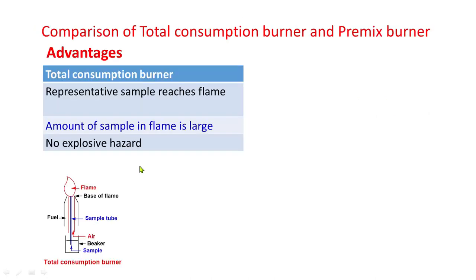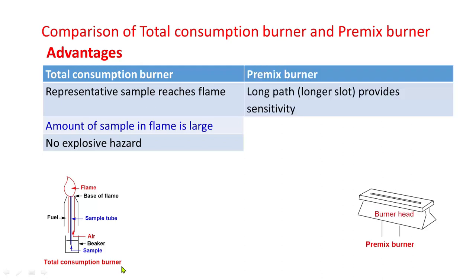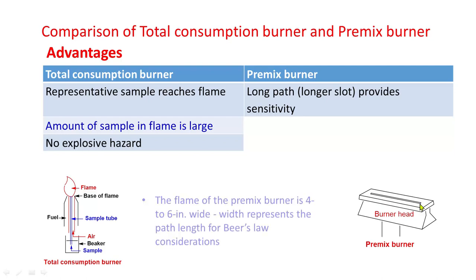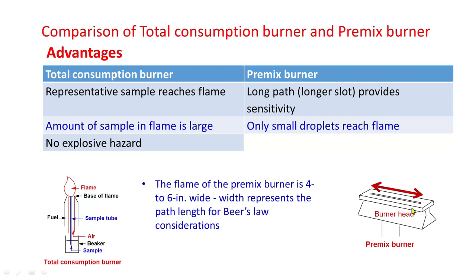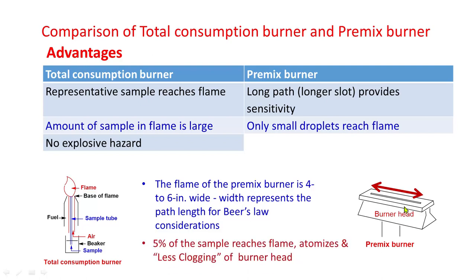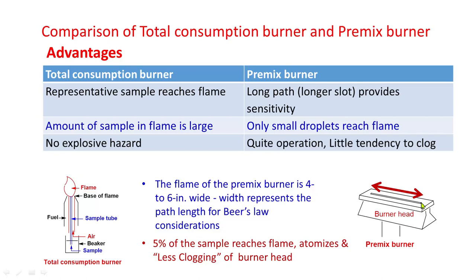Comparing the advantages of the two burners: for the total consumption burner, a representative sample reaches the flame, the amount of sample in the flame is large, and there is no explosion hazard. For the premix burner, the path length is long, providing greater sensitivity. Only small droplets reach the flame, 5% of the sample atomizes, there is less chance of clogging, and it offers quiet operation.